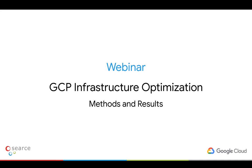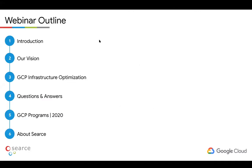The focuses we're going to cover are compute optimization, storage optimization, and Kubernetes optimization. We're going to start with an introduction of the panelists, our vision and purpose for this workshop, then walk you through technical tips and tricks for GCP infrastructure optimization, and open up for a Q&A from attendees. We'll also have a message from Google about active GCP programs for cost optimization for the coming year, and give you information about Sears along the way.